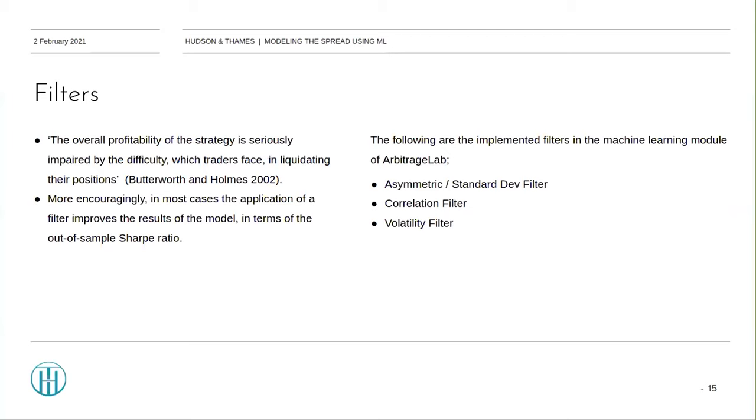This is achieved by using a standard threshold, a correlation, and a volatility filter to further refine the various models' return risk characteristics. More encouragingly, in most cases, the application of a filter improves the results in terms of out-of-sample Sharpe ratio.